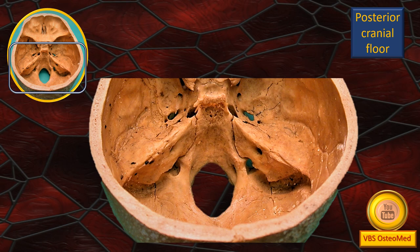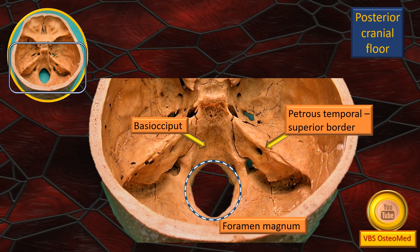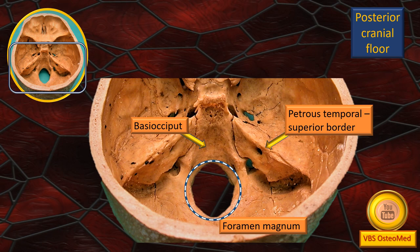The key features of the osteology of this area are highlighted with three points. The blue-white dotted circle marks the huge foramen magnum — the very key structure of this area, through which pass the medullospinal continuation, the dural and meningeal coverings, and the vertebral vessels. A flashing arrow indicates the upper or superior border of the petrous part of the temporal bone.